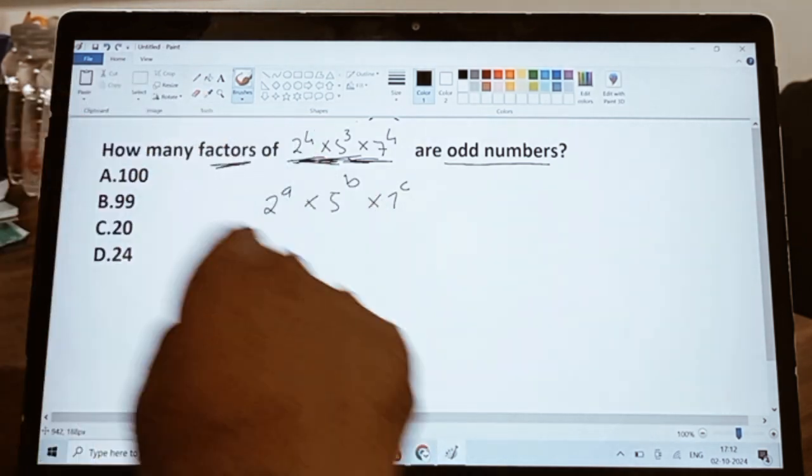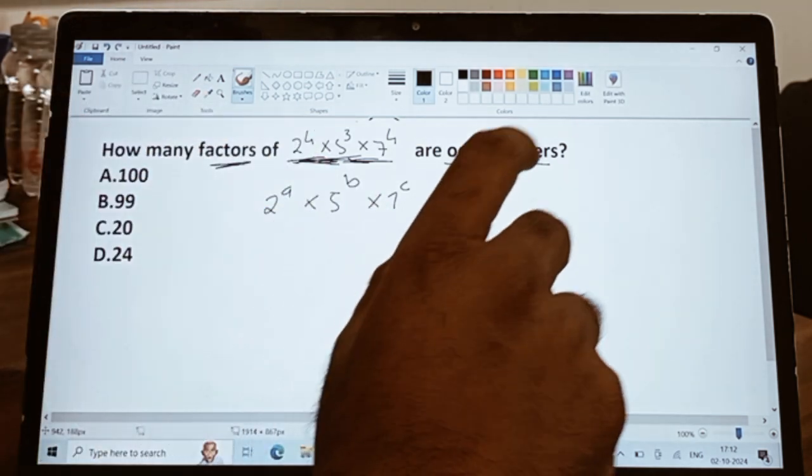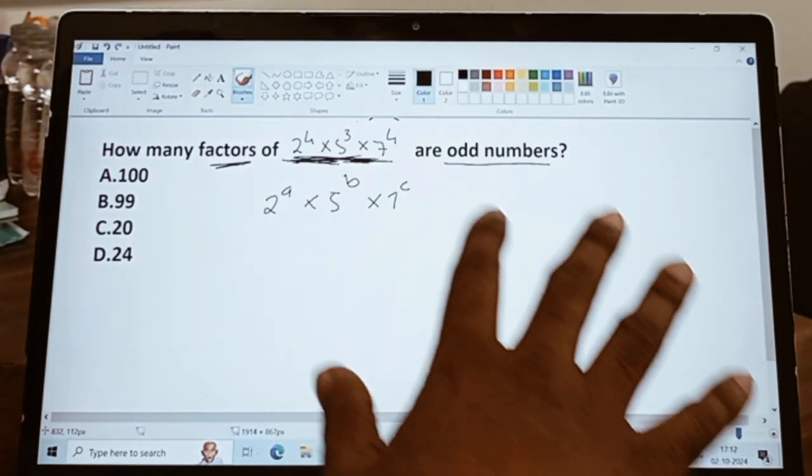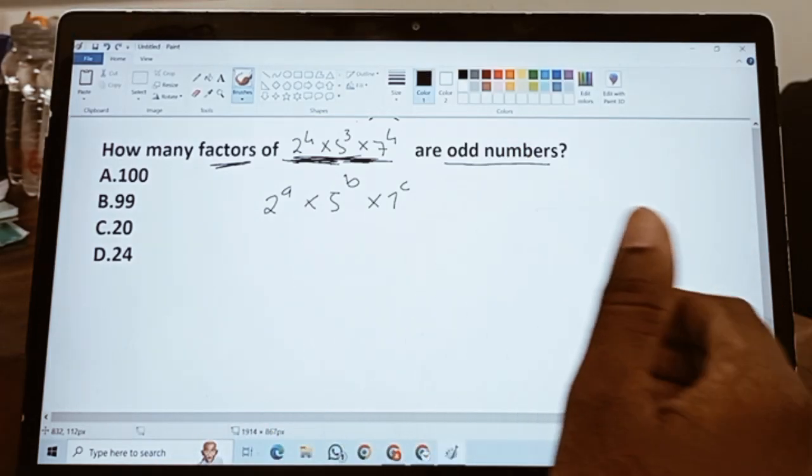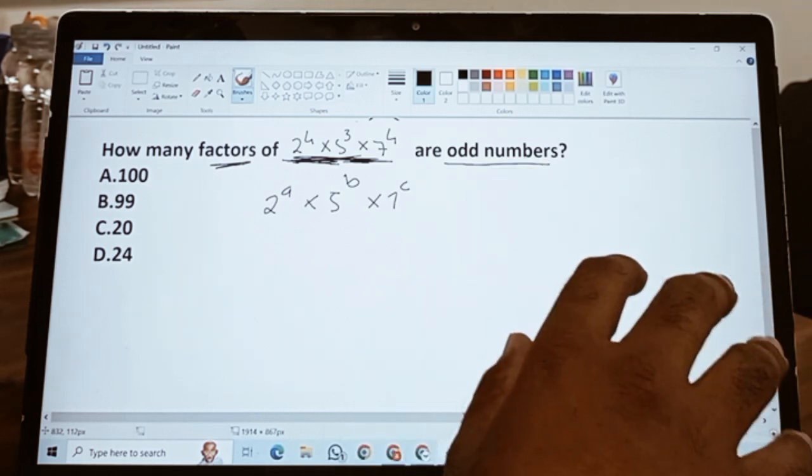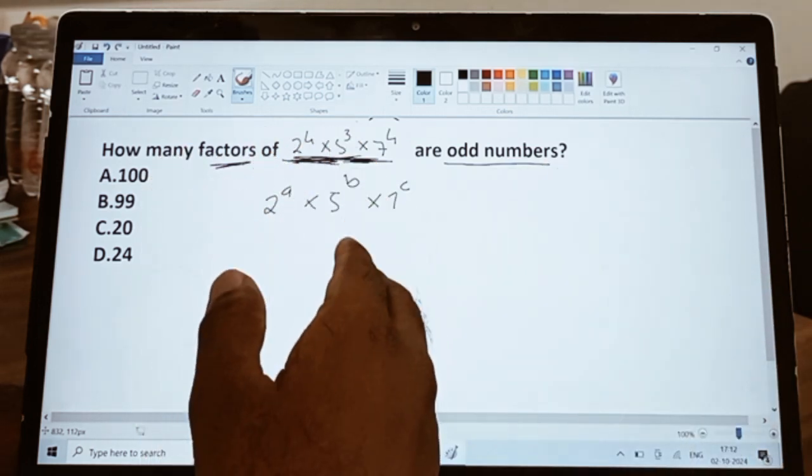After multiplying this number you will get a proper number which will be a factor of this number. So literally you don't have to simplify all these things, right? We need to understand whenever you see these kind of questions, it has to do with your indices, that is a, b, and c.